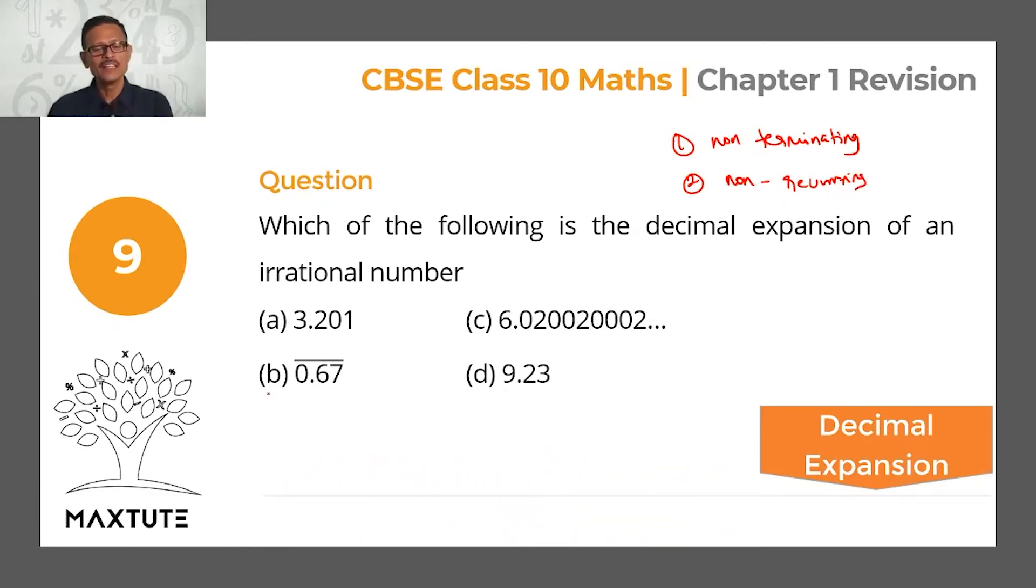Excuse my handwriting, it's alright. 3.201, it's terminating, so it cannot be an irrational number.